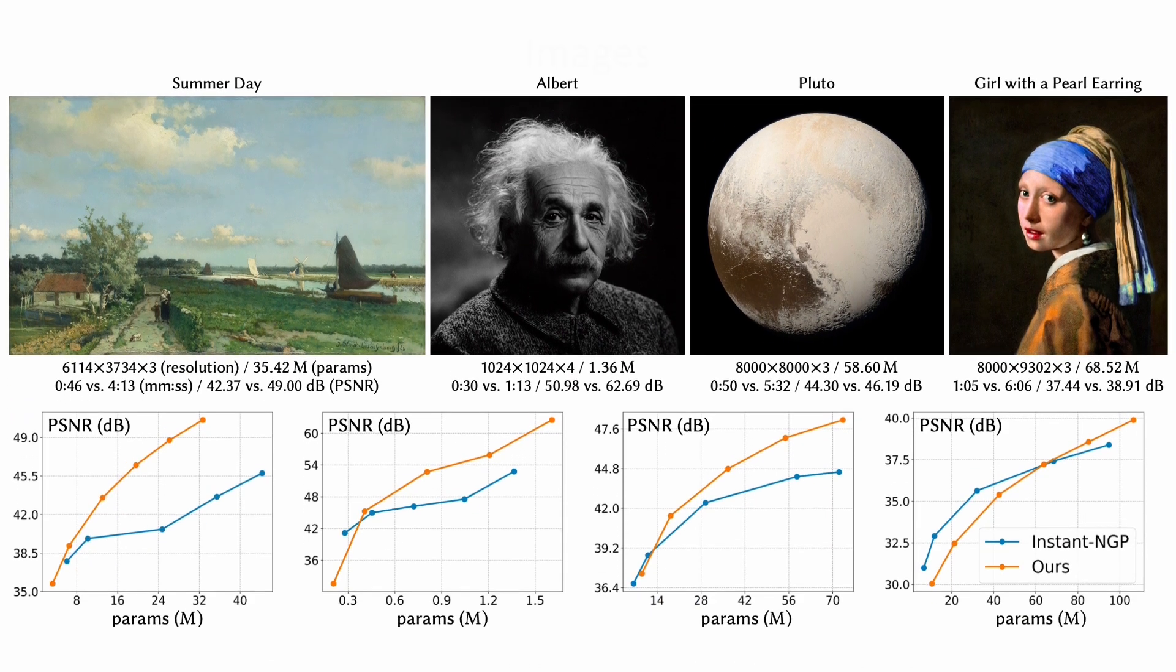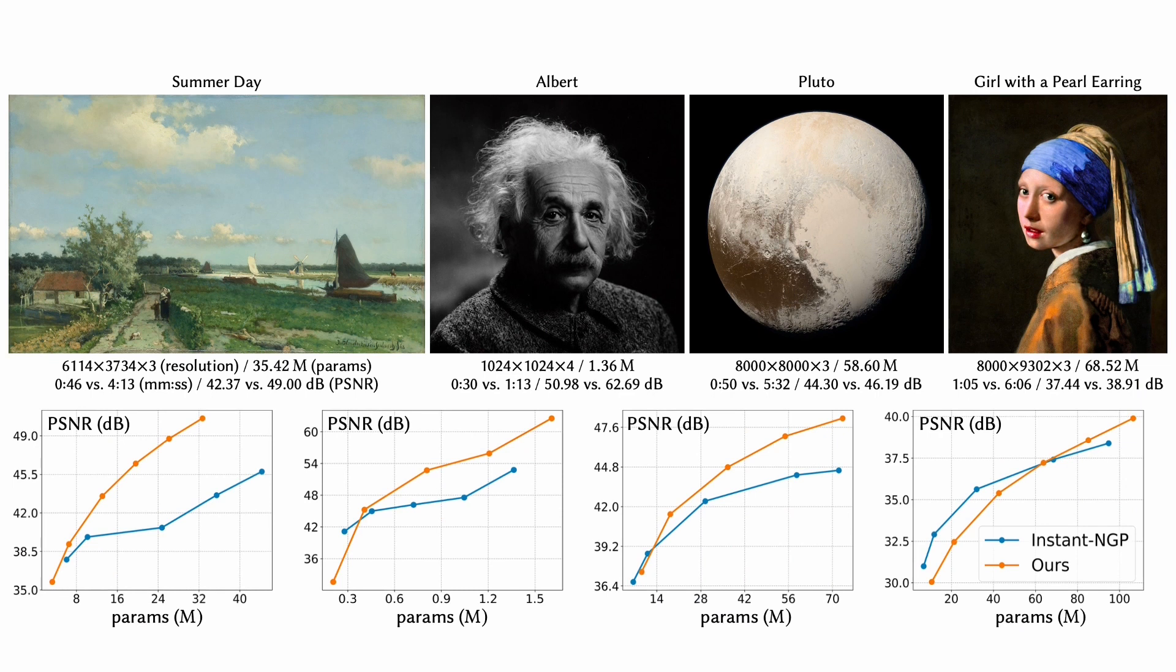We directly regress RGB pixel colors from pixel coordinates and evaluate our DIF on fitting four complex high-resolution images. We also report a comparison to Instant NGP in terms of optimization time and PSNR metrics at the bottom using the same number of model parameters. Compared to Instant NGP, our model consistently achieves higher PSNR on all images when using the same model size, demonstrating the superior accuracy and efficiency of our model.